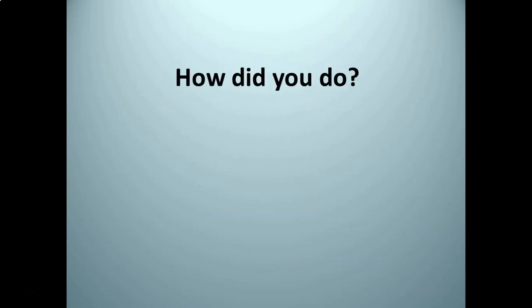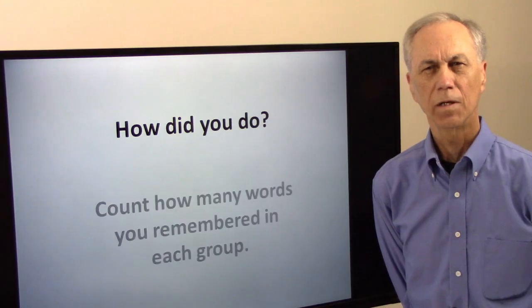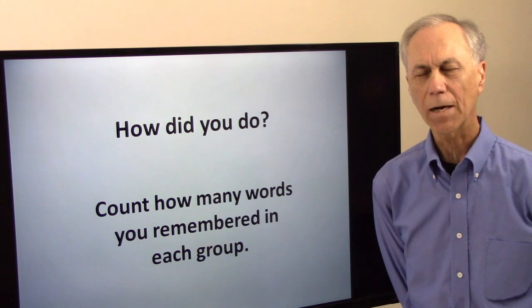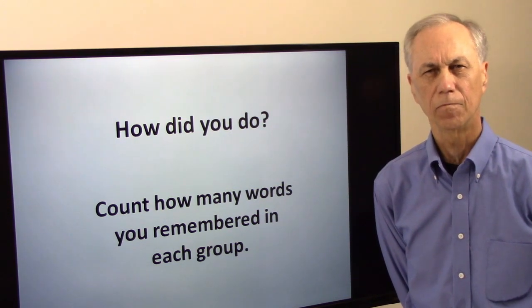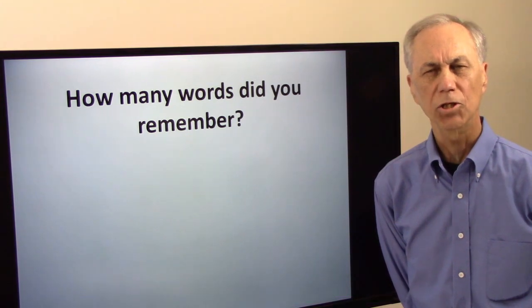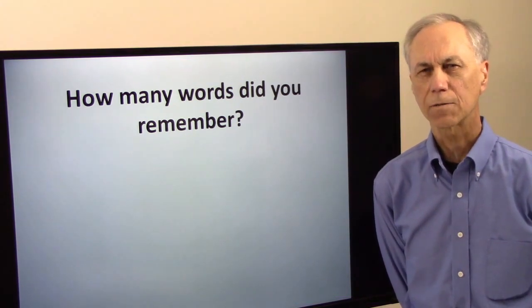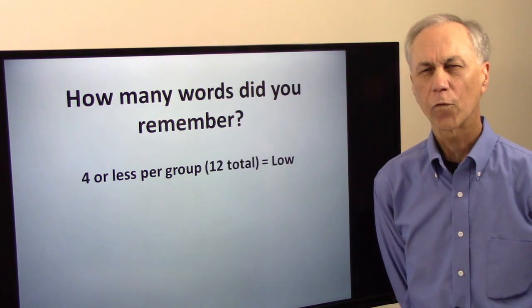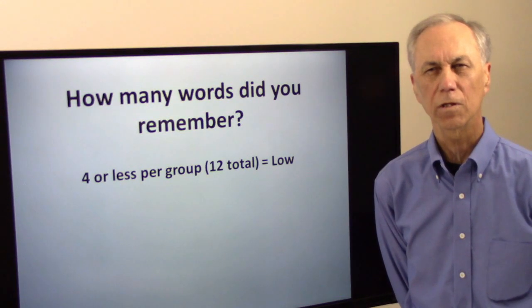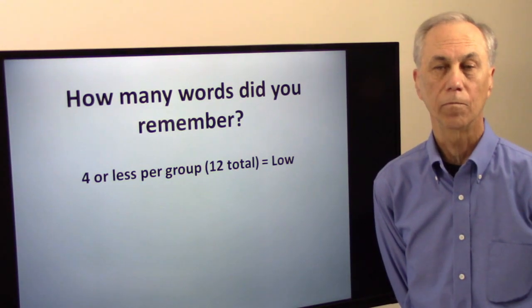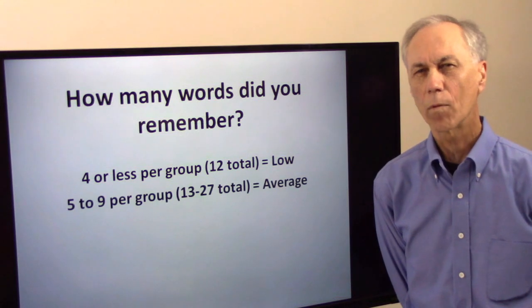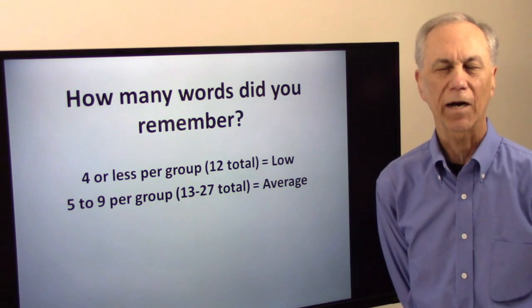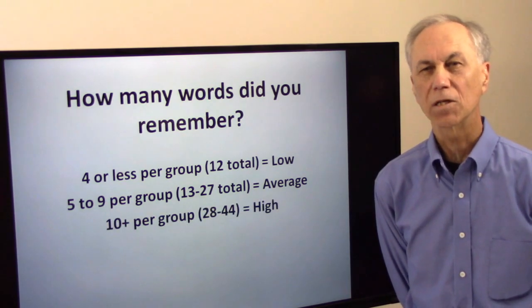Okay, stop. How did you do? Now count how many words you remembered in each group. You can either keep the numbers separate or total them all up. If you remember 4 or less per group or maybe about 12 in total or less, that's a low score. If you remember 5 to 9 per group or between 13 and 27 total, that's about average. And if you remember 10 or more per group, that's 28 up to the total 44 which is all of them, that's very high.